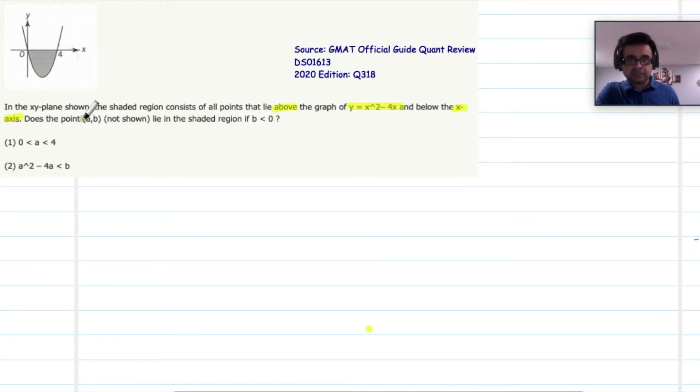We're also given a point (a,b). It's not shown. But what we are given about point (a,b) is only one thing: that b has to be less than zero. That means that point (a,b) must lie in quadrants number three or four because b is less than zero, and three and four are the quadrants where y is less than zero since b is the y coordinate of point (a,b).